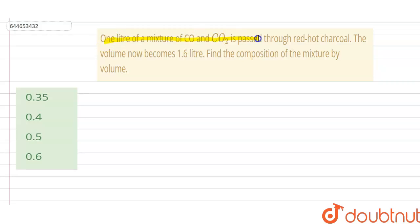Hello, so our question is: one liter of a mixture of CO and CO2 is passed through red hot charcoal. The volume now becomes 1.6 liters.